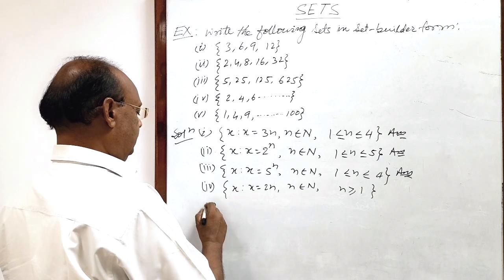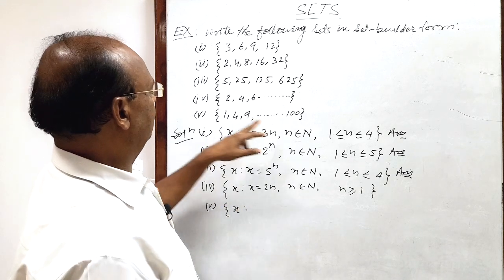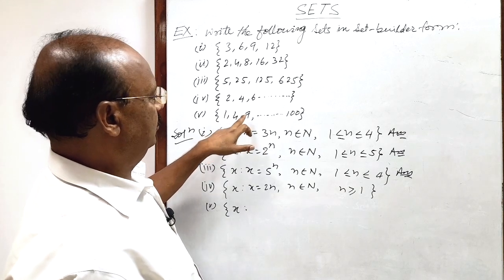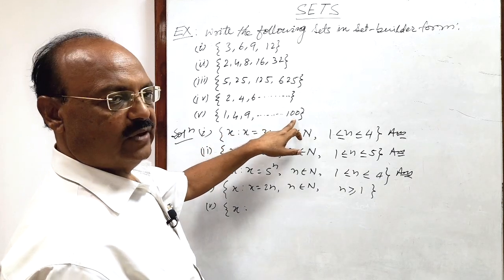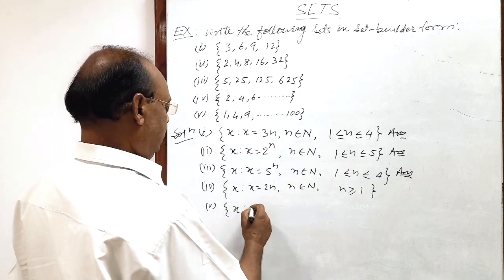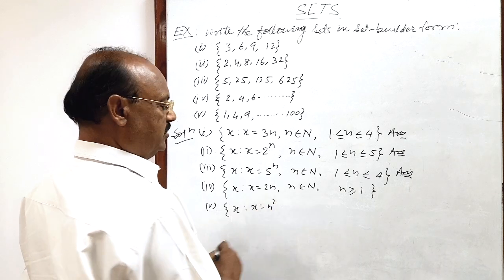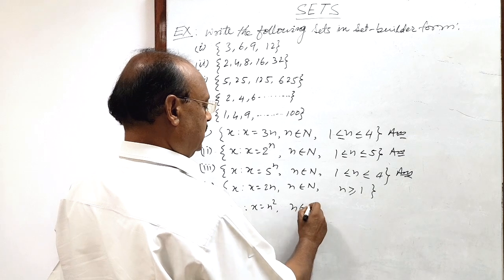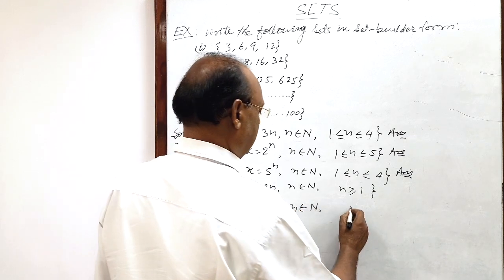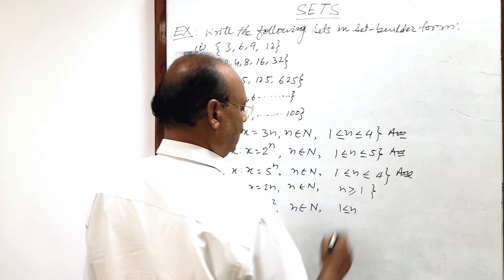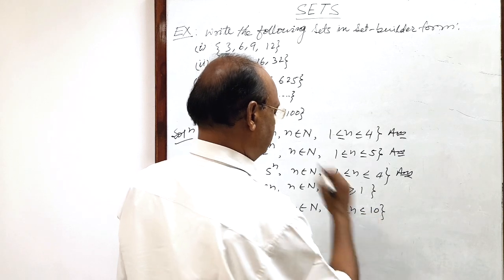The last fifth part: 1, 4, 9, ..., 100. This is 1 squared, 2 squared, 3 squared, ..., 10 squared. So we write x such that x is equal to n squared, where n belongs to the set of natural numbers, and n must be greater than or equal to 1 and less than or equal to 10.